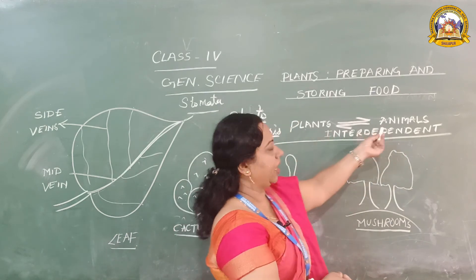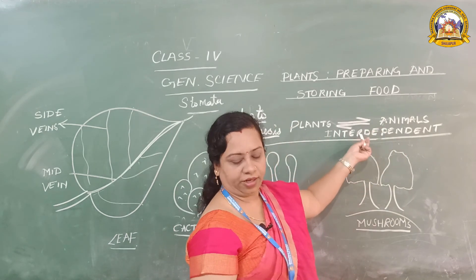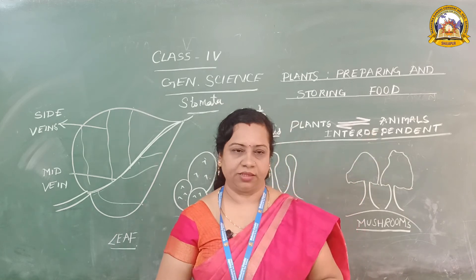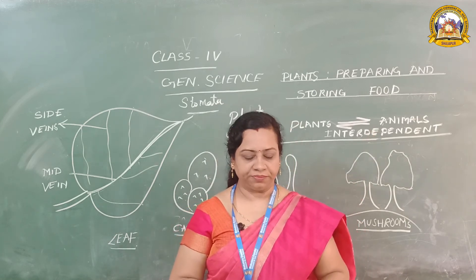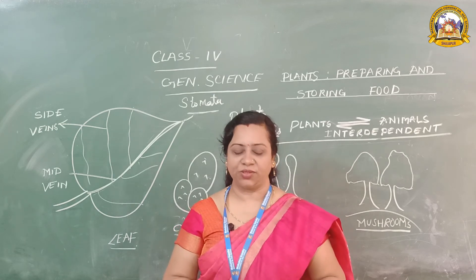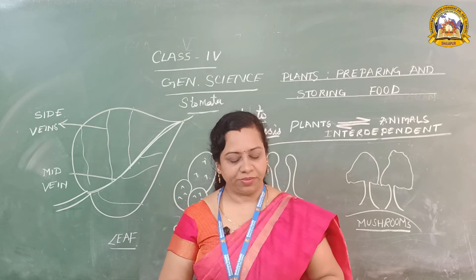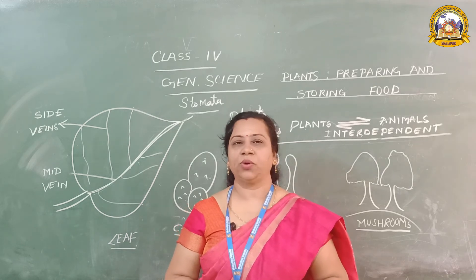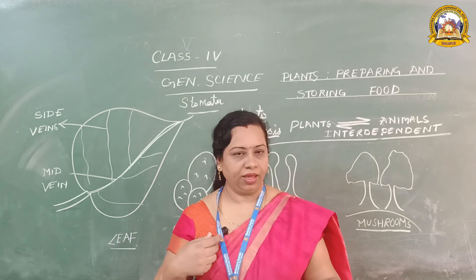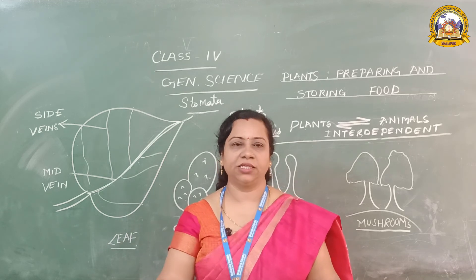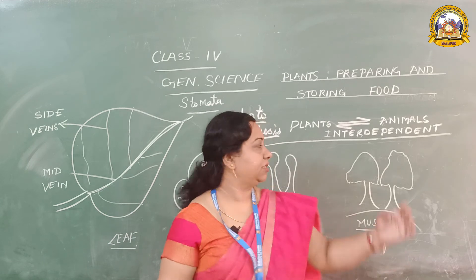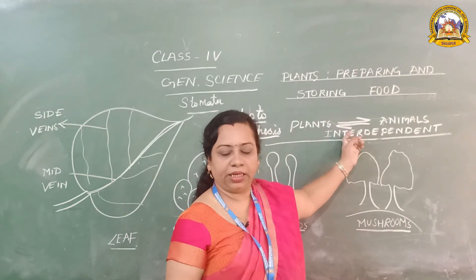Plants and animals depend on each other for survival. Animals and humans need food to eat and oxygen to breathe — plants give them this. And plants need carbon dioxide, which we and animals give them to survive. Therefore, plants and animals are both interdependent.